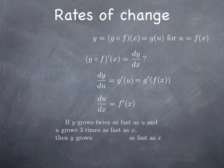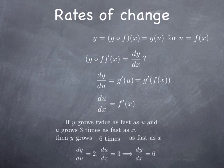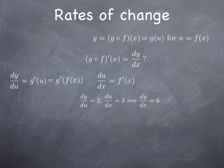Now let's think about these rates of change. If y grows twice as fast as u, and u grows three times as fast as x, then y should grow six times as fast as x — hopefully this is intuitively clear. So if the rate of change of y with respect to u is 2 and the rate of change of u with respect to x is 3, then the rate of change of y with respect to x is 6. In other words, to get the rate of change of y with respect to x, we multiply the rate of change of y with respect to u by the rate of change of u with respect to x.